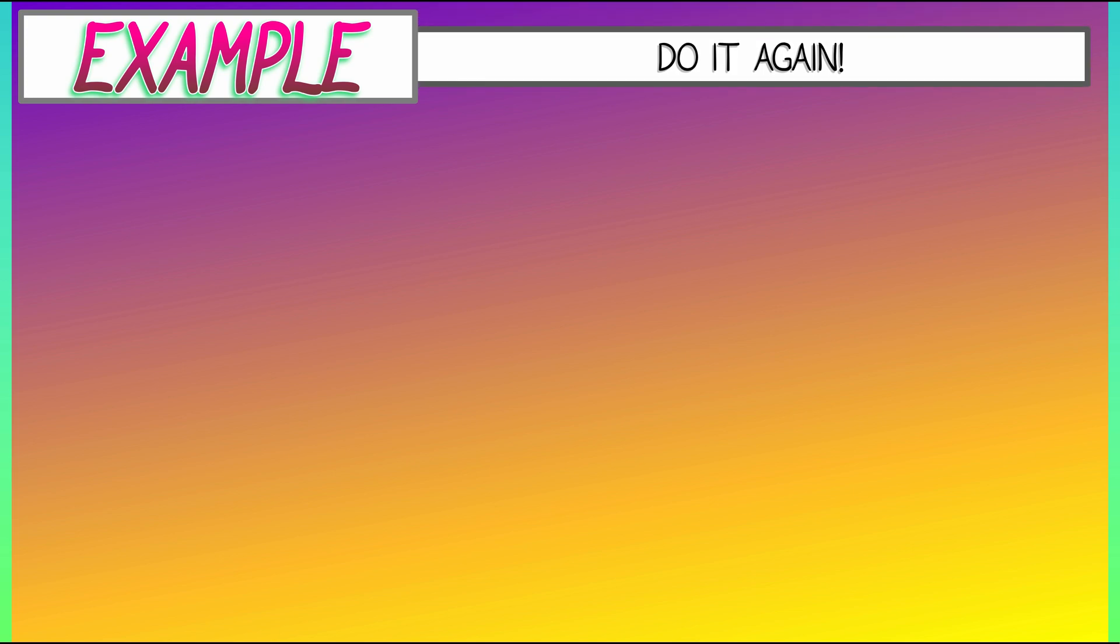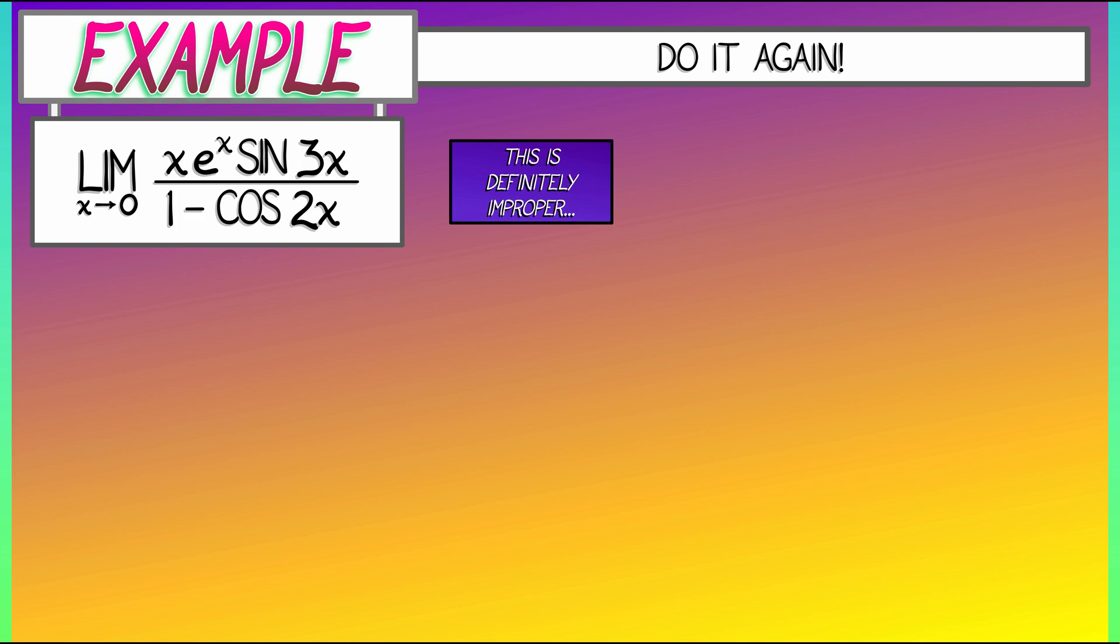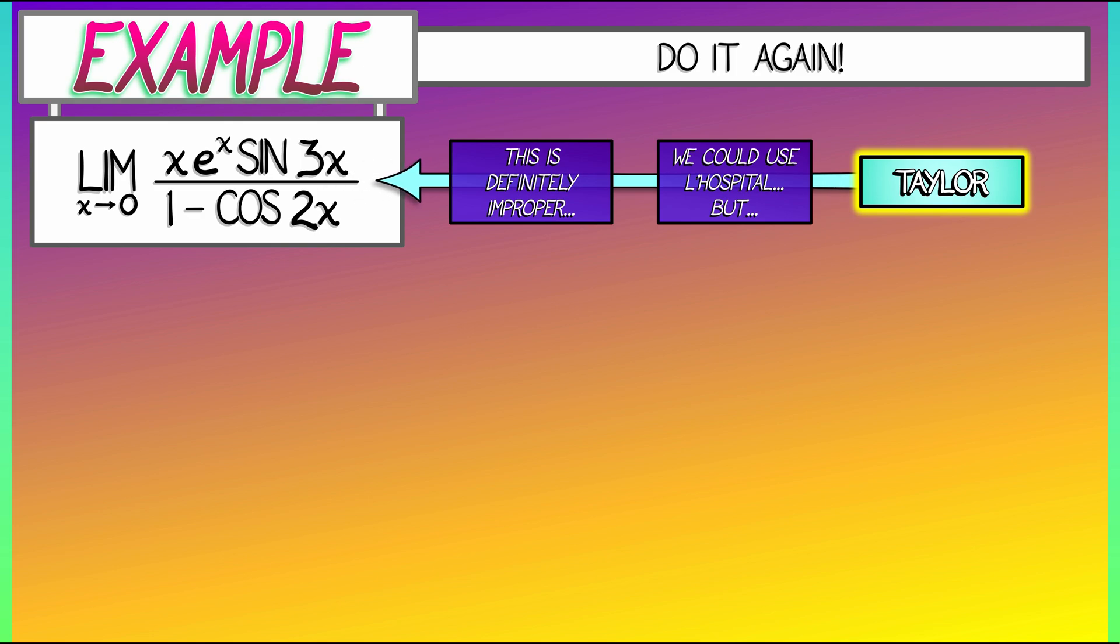Let's see this in the context of an example. Consider the limit as x goes to 0 of, in the numerator, x times e^x times sin(3x). And in the denominator, 1 minus cos(2x). Now this is definitely an improper limit. If I evaluate at 0, I get 0 over 0. So we could use L'Hopital's rule to get at this, but let's do it with Taylor expansions instead, since we already know the Taylor series for these basic components.